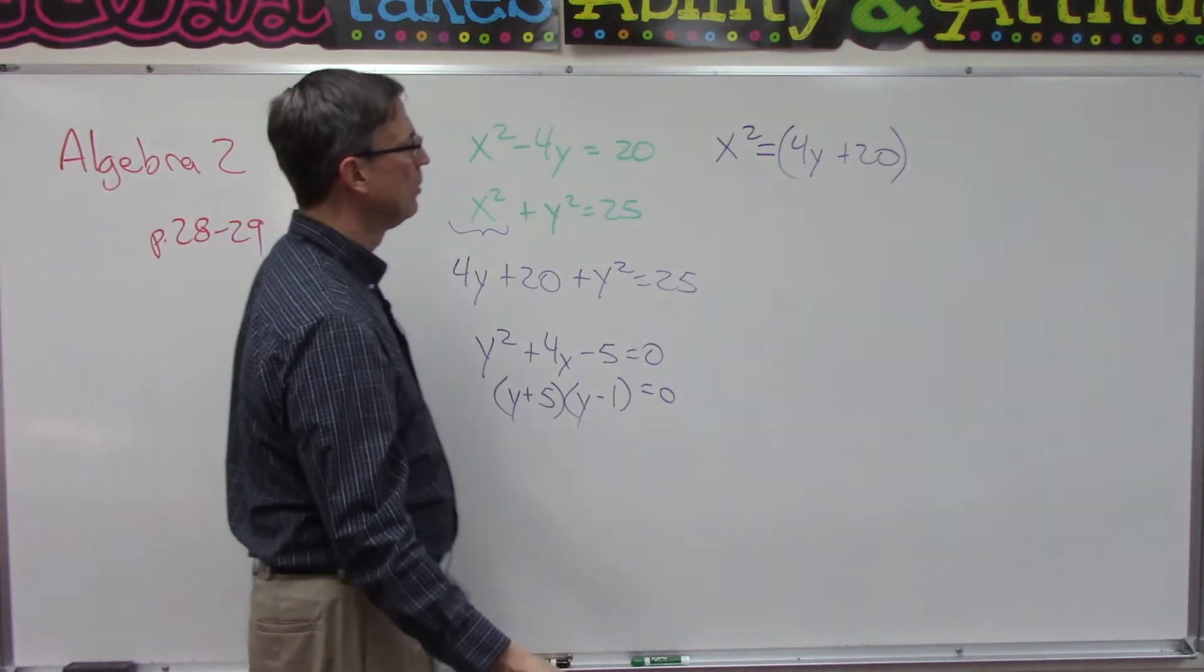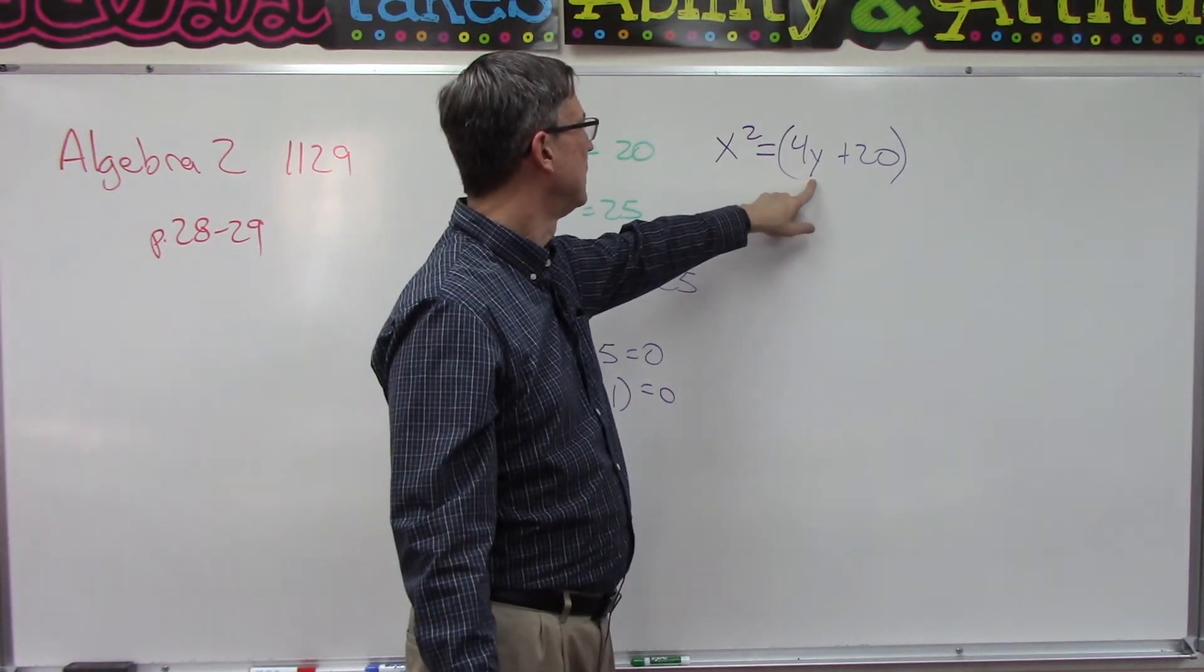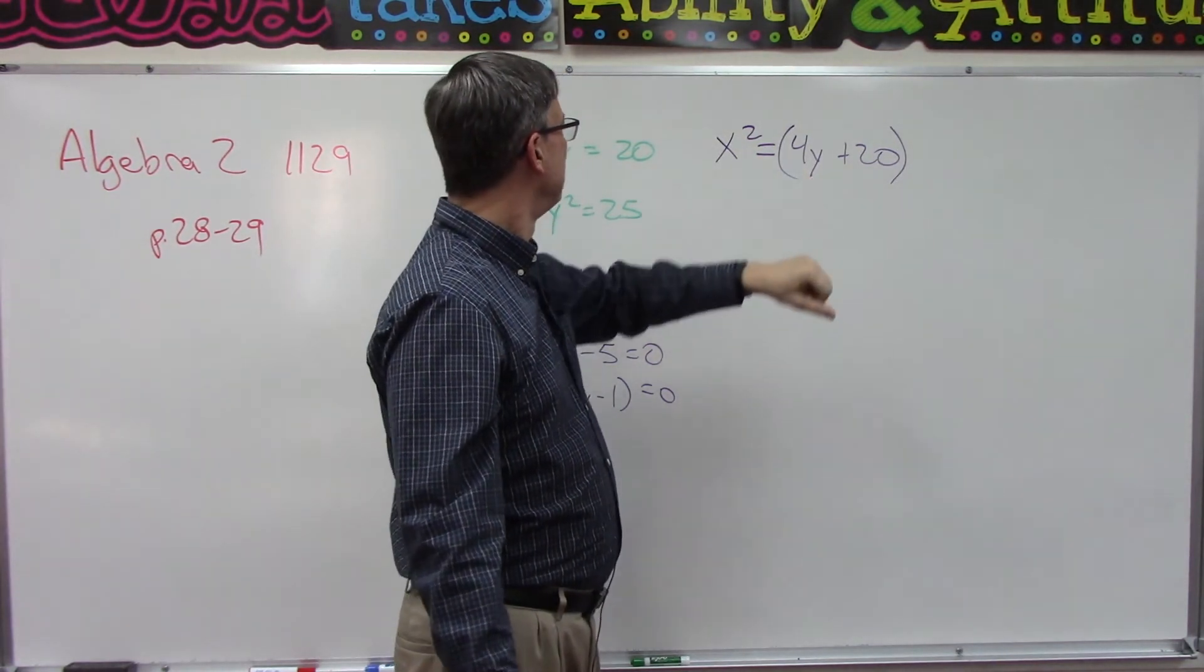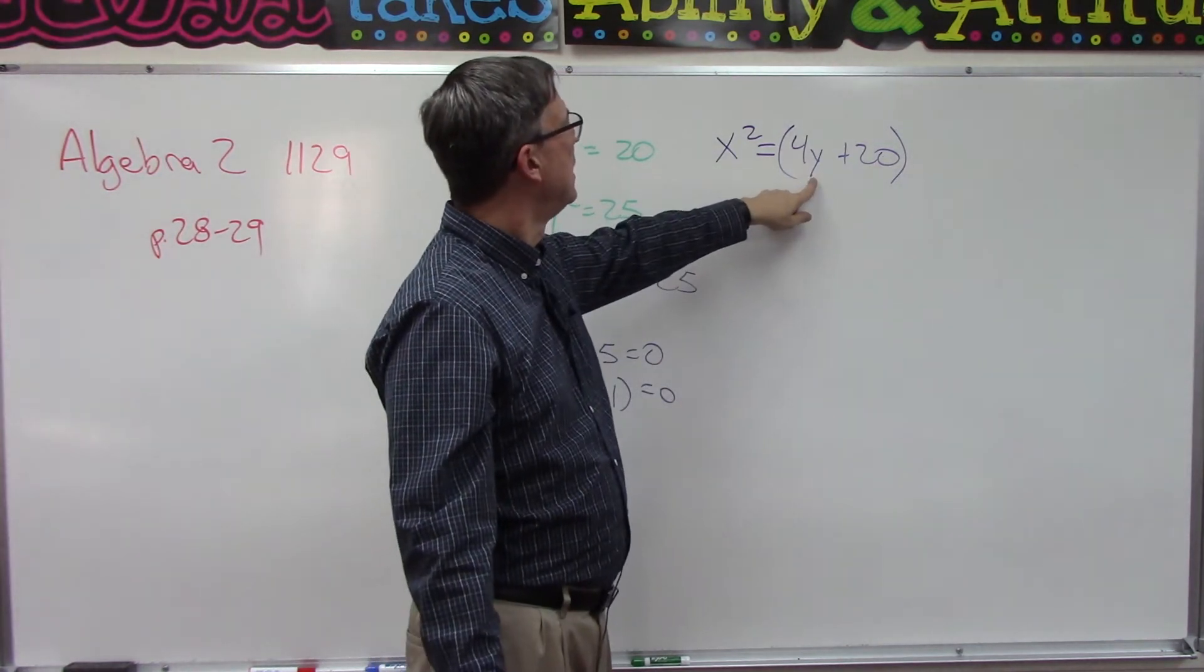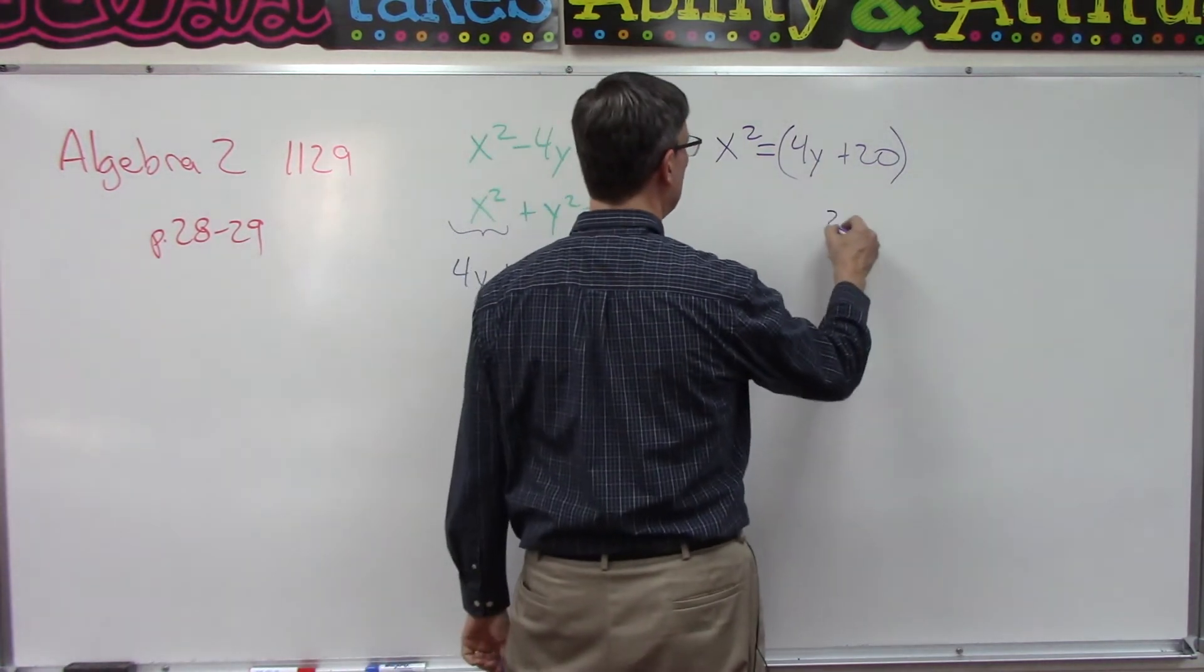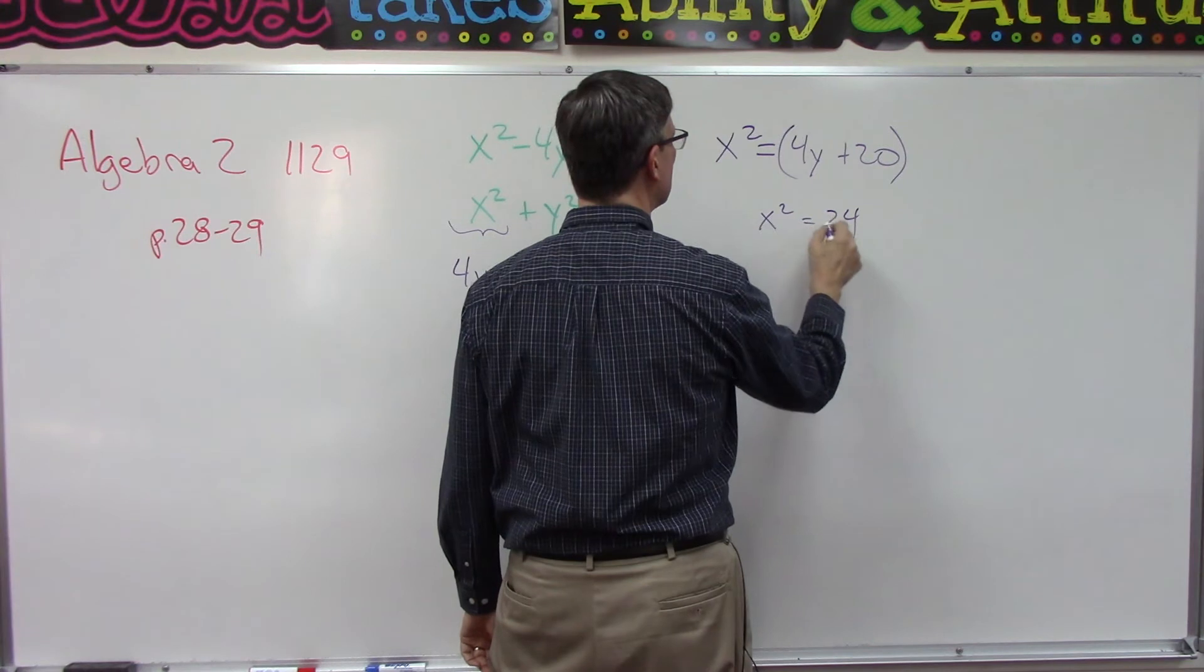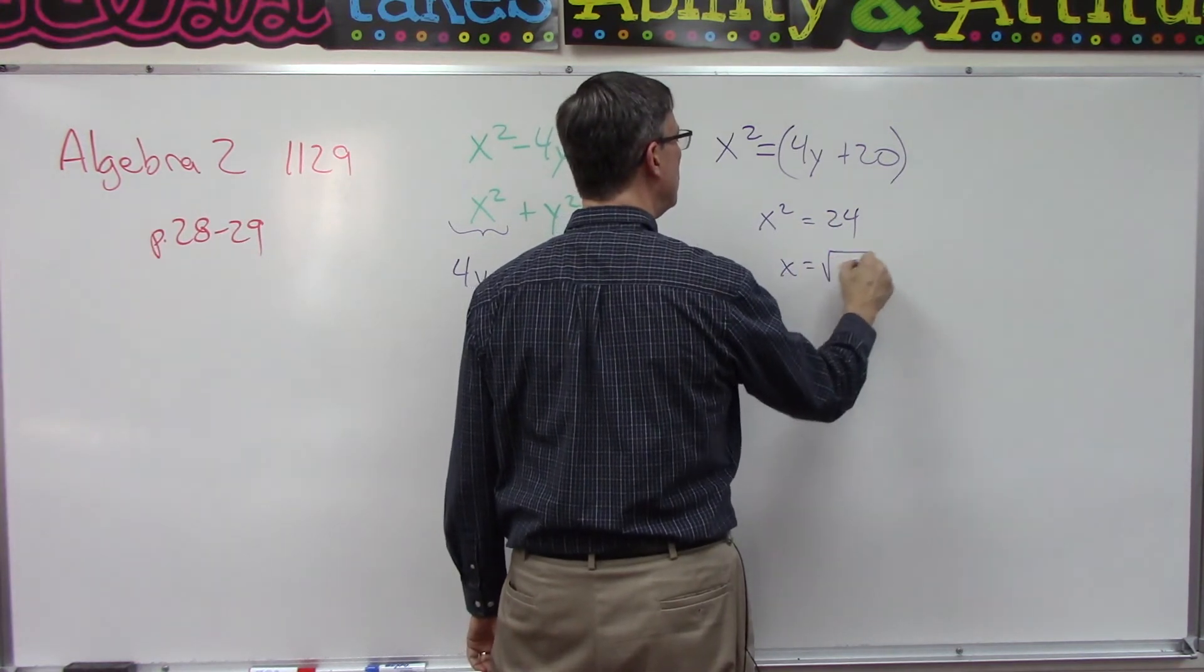I'm going to let you finish it, right? 5y would be the negative 5 and y here is going to be positive 1. Let's take the positive 1. Look what happens up here. You plug in the 1 up here because we want to go back and solve for x. Plug in the 1 and you get 24. Okay, x squared equals 24.